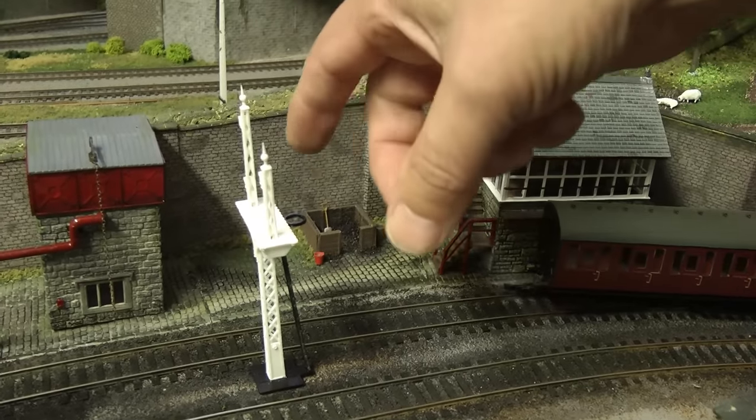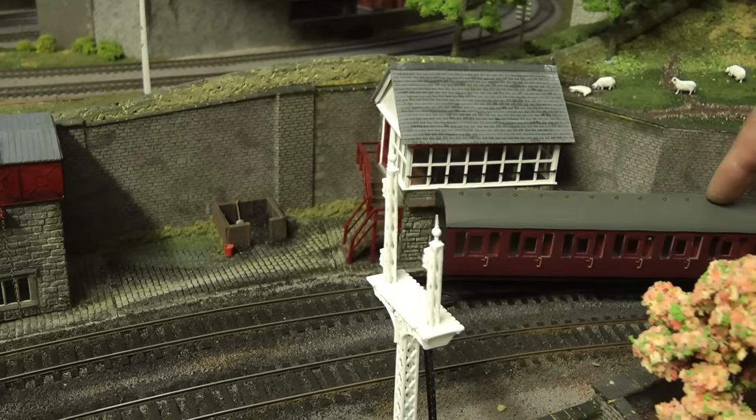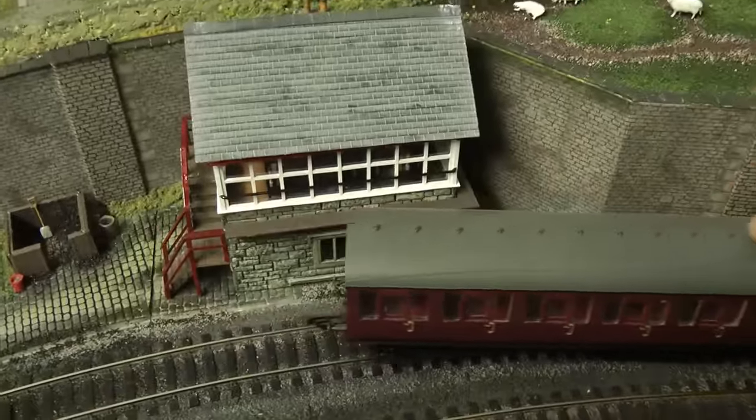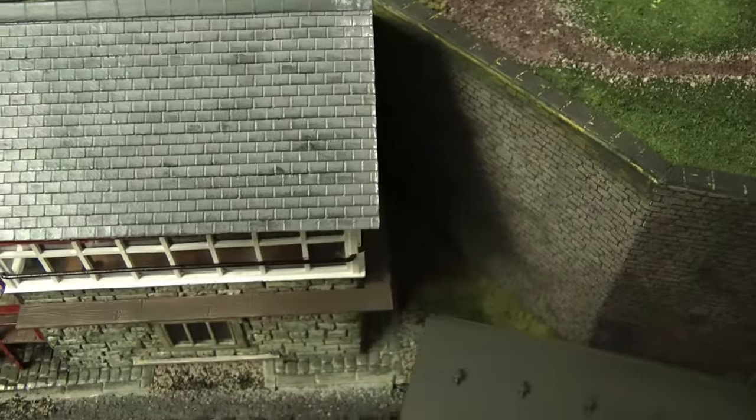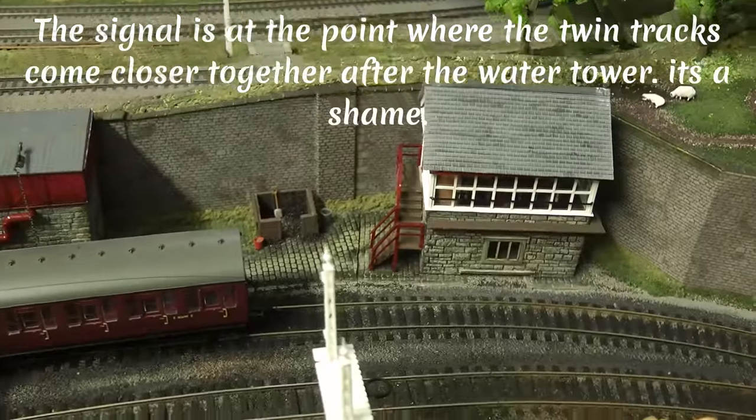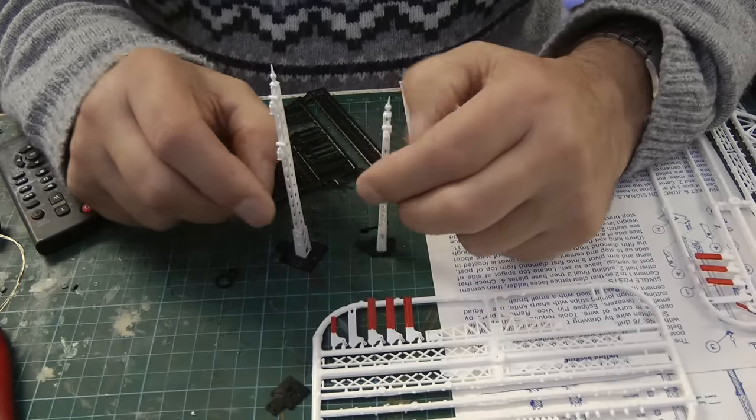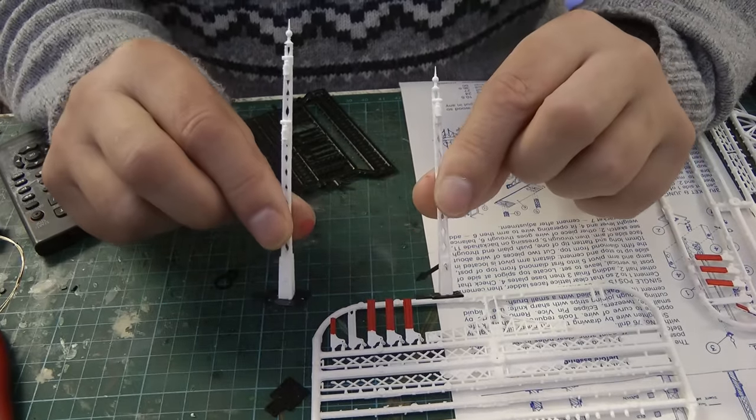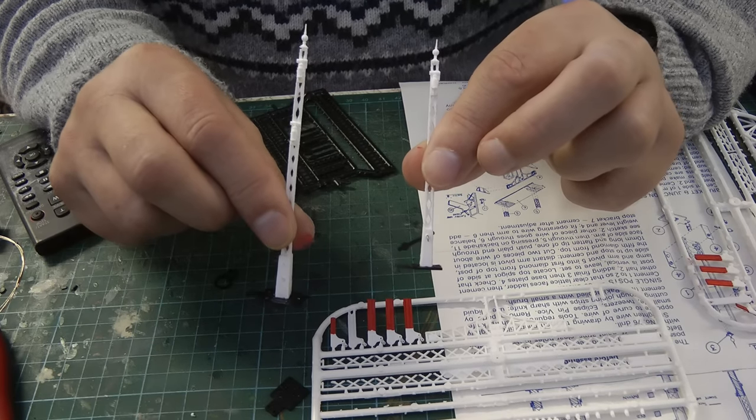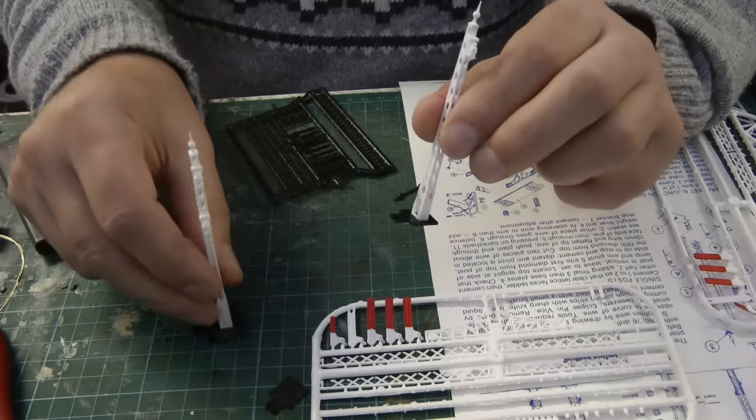This signal unfortunately will have to go somewhere else on the layout. That's the thing, you've got to try these things before you make your decision of where you want to put your signals. Ideally that would look great in the middle of there and it's functional as well, but it's just too close to any other rolling stock. Even looking at this from this view it just misses the signal box by about five millimeters. It's back to the drawing board.